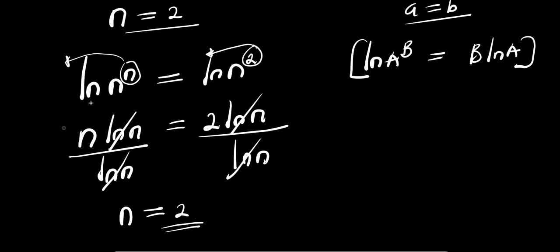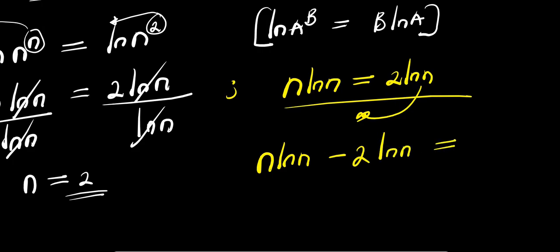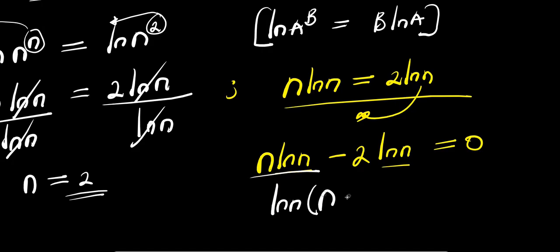At this point of the equation — n times ln(n) equals 2 times ln(n) — we can also formulate a factored equation. Moving the right side over, we have n times ln(n) minus 2 times ln(n) equals 0. Since ln(n) appears in both terms, we factor it out: ln(n) times (n minus 2) equals 0.